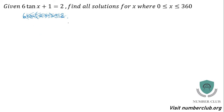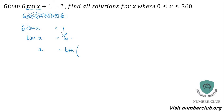Given that 6 tan x plus 1 equals 2, what you must do is try to get tan of x to be the subject. So 6 tan of x equals 2 take away 1, which is 1, which means tan of x is going to equal 1 sixth. Make the trig and the variable the subject, and then from there you can make the variable the subject. So you've got inverse tan of 1 sixth.